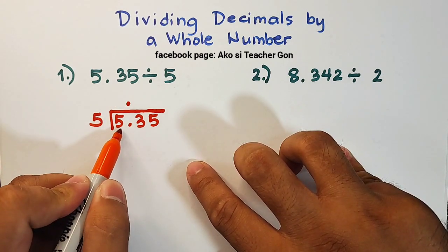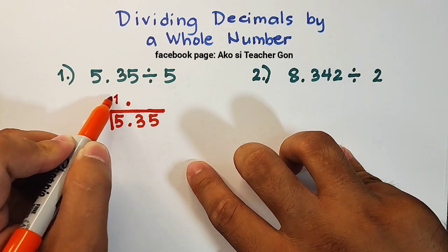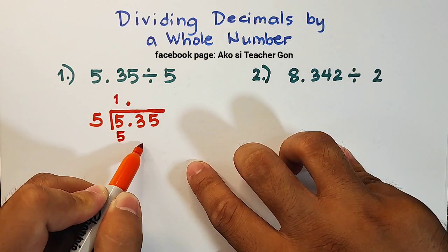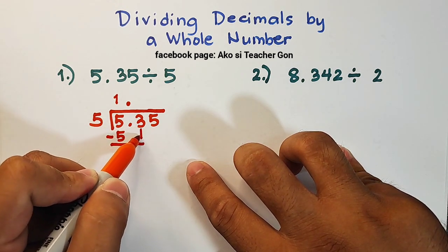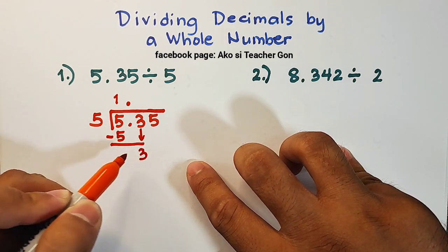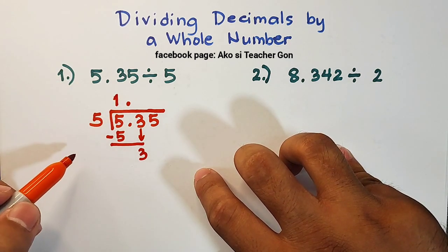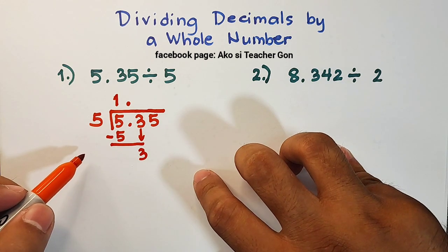So first, we have 5 divided by 5, that is equal to 1. 1 times 5, that is equal to 5. Subtract this number, this is 0, and then bring down. Bring down 3. So our routine here is that we will divide, multiply, subtract, and bring down.